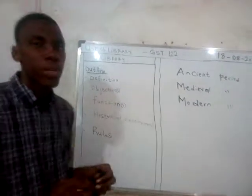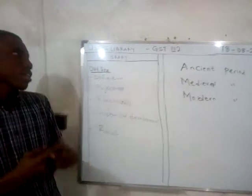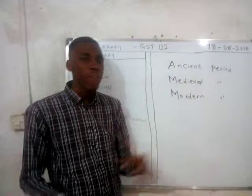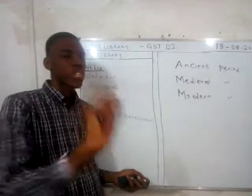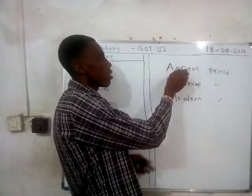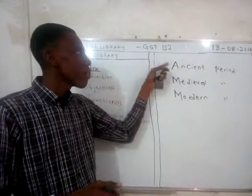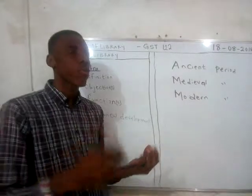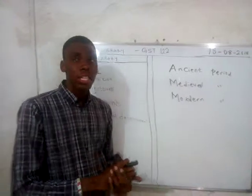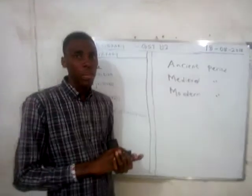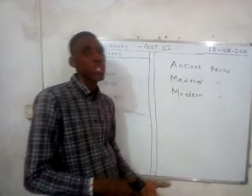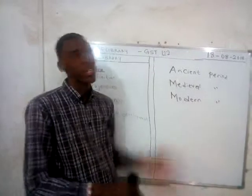Looking at the ancient period, it is pertinent for us to know that the origin of the library is as old as the origin of writing itself. In the ancient period, we have the Egyptian system of writing, the Sumerian system of writing, the Babylonians, the Mesopotamians — today known as Iraq — and then we have the Greek system.